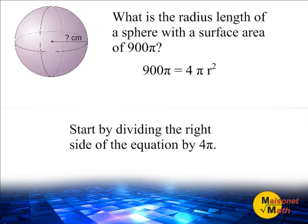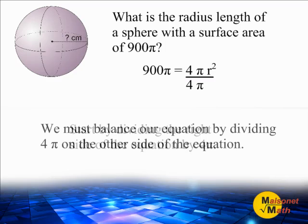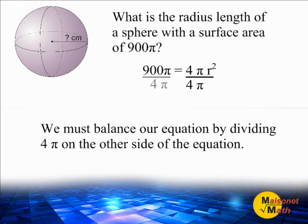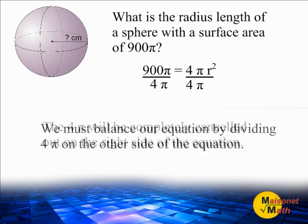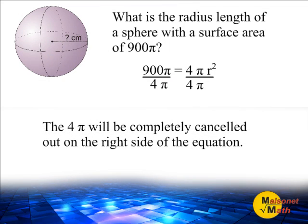We are going to start by dividing the right side of our equation by 4π. We must balance our equation by dividing 4π on the other side as well. So we have to take 900π and divide that by 4π to balance our equation. The 4π will be completely cancelled out on the right hand side.